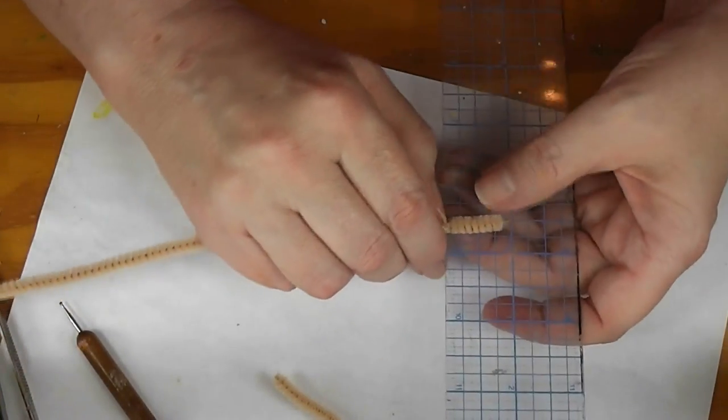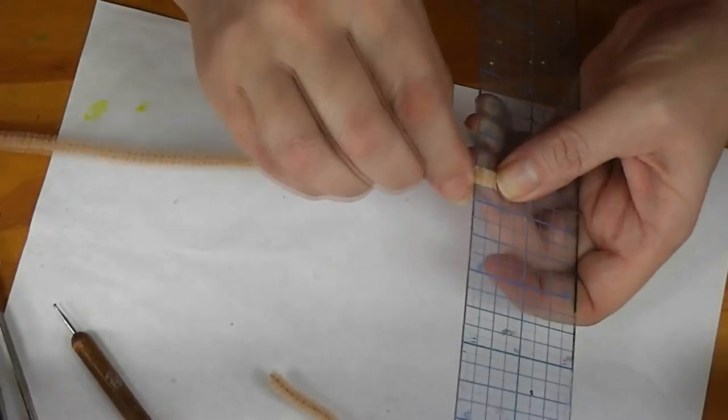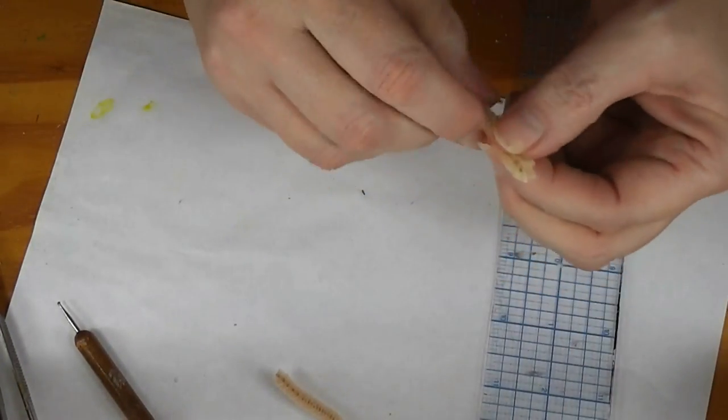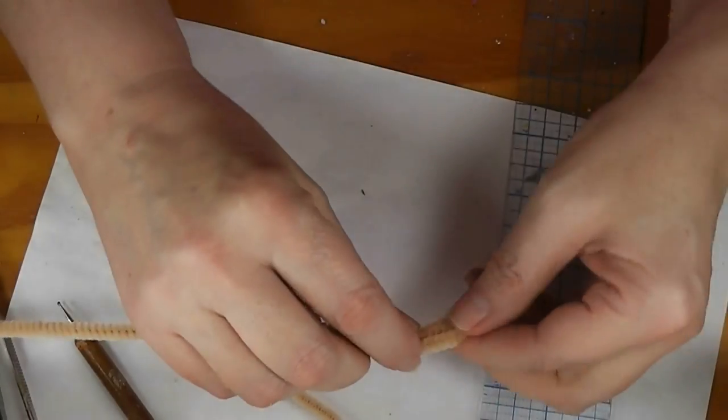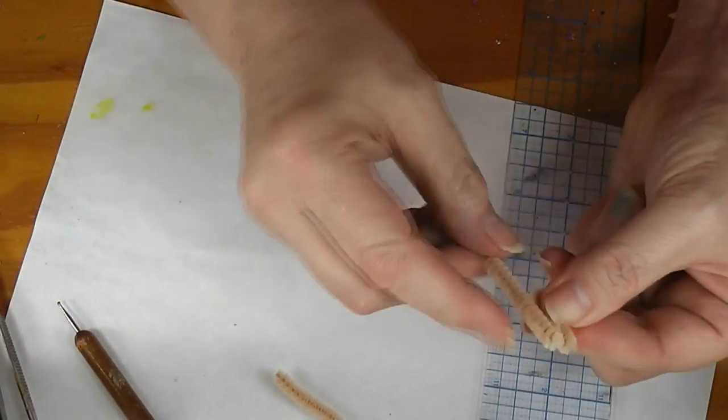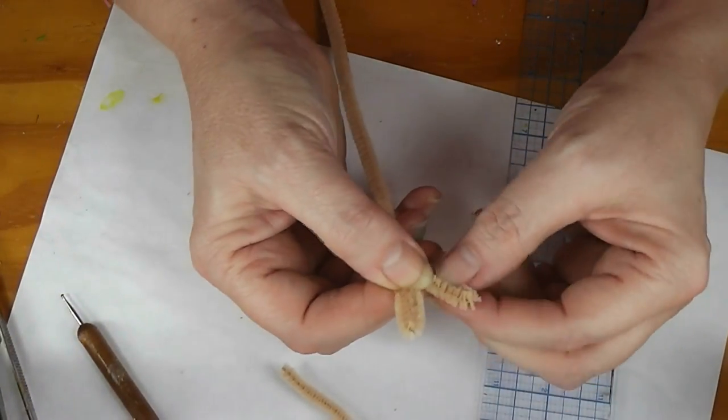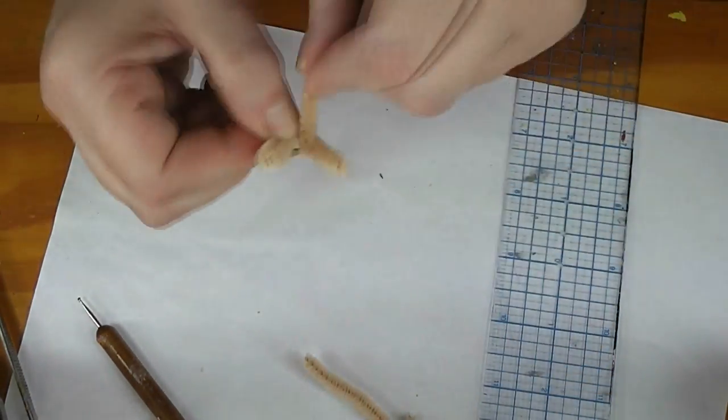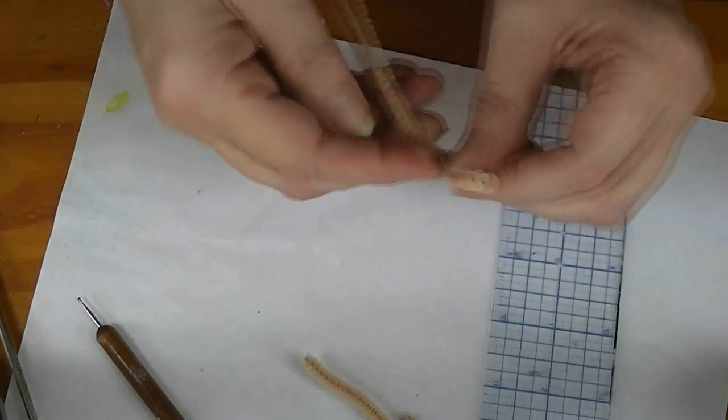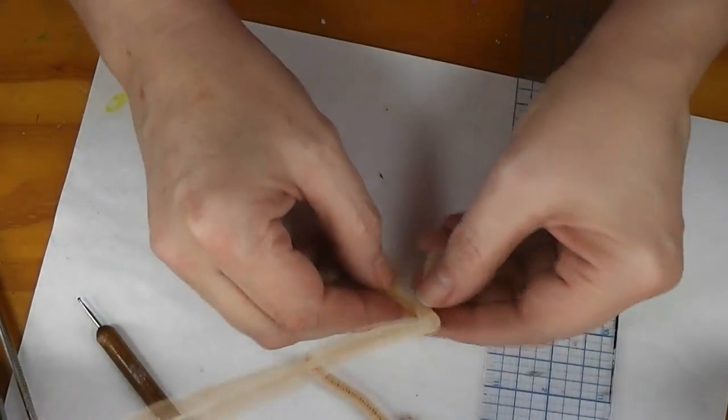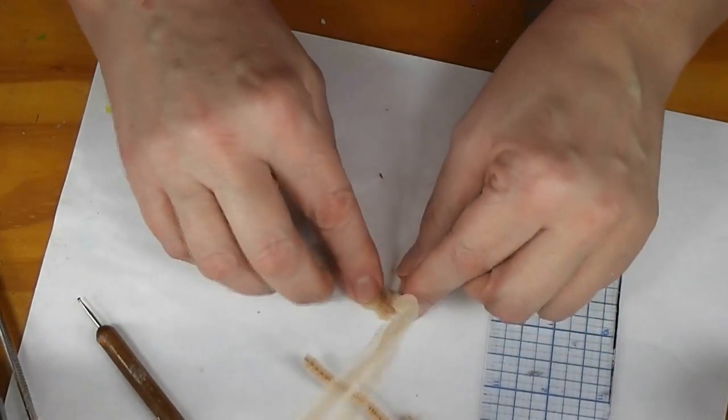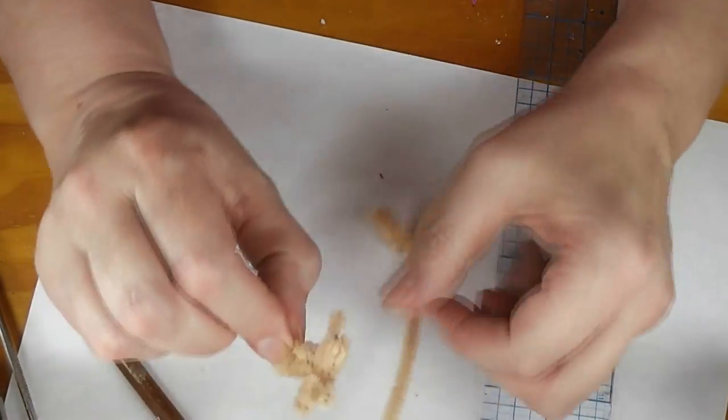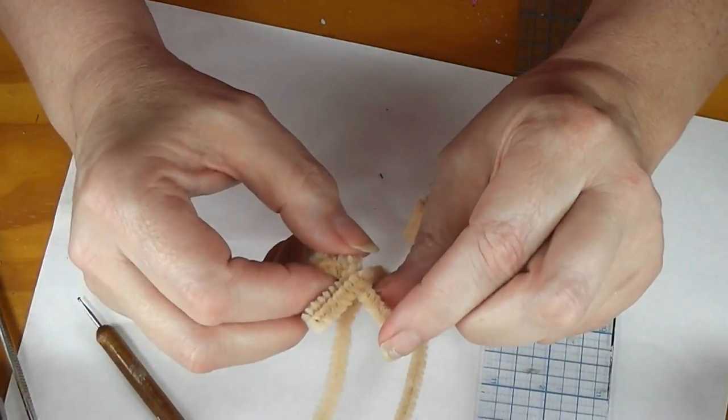Now our second chenille stem—trying to get my ruler here where it doesn't bump the camera—three-quarters of an inch and fold over. Fold it there, fold that in half, and repeat. Now you're going to have an M. I like to come up around that, so we've got—those are our legs, we're going to form our feet from that later.